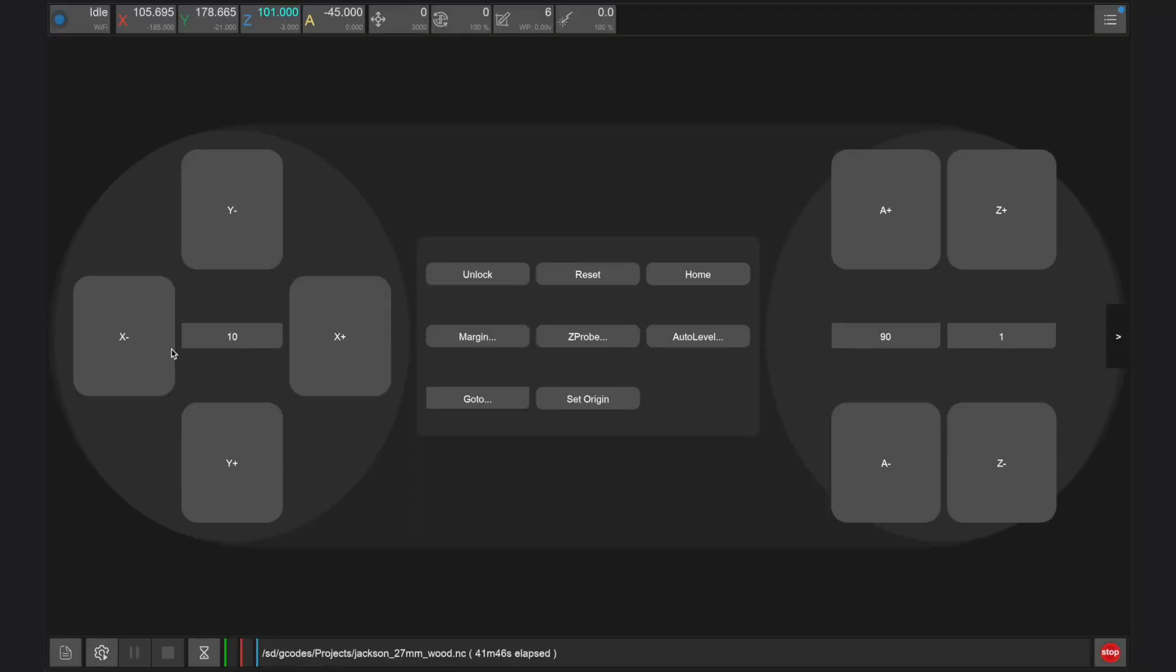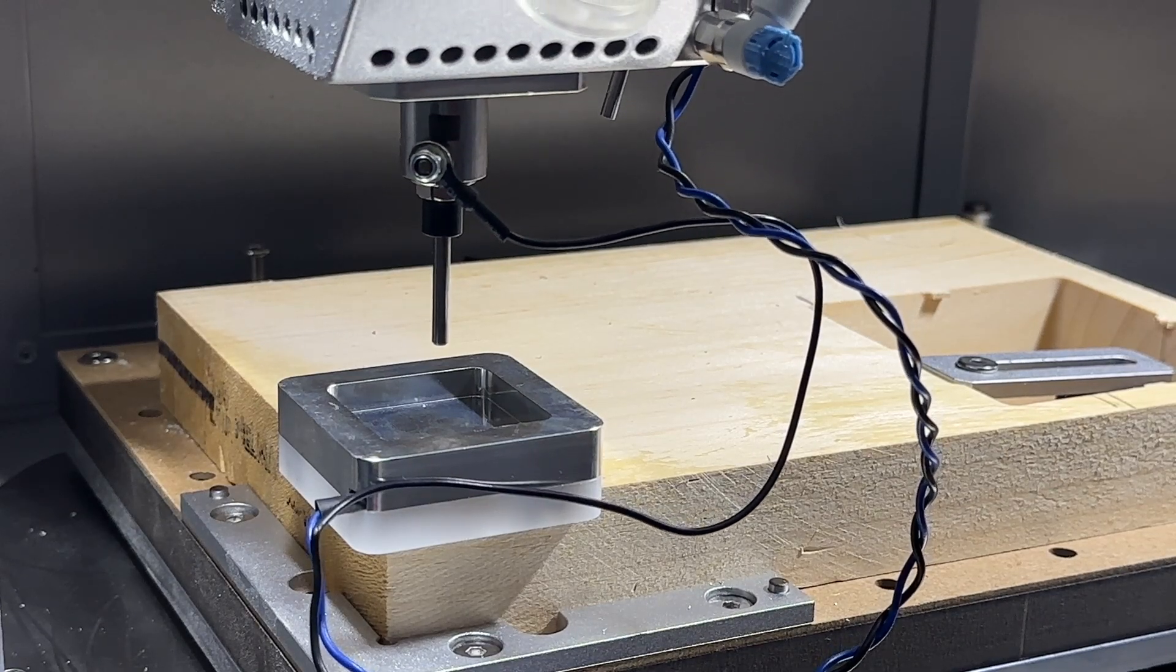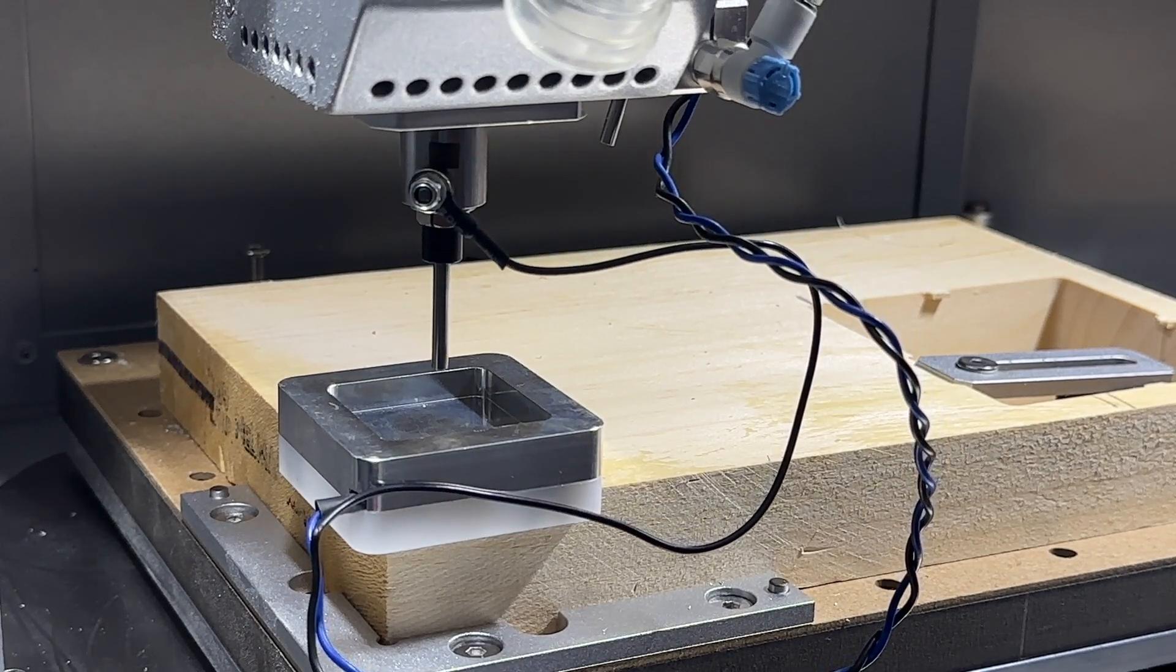After putting all these items in place, you may need to readjust and manually move the head of the Carvera again so that the probing tool is aligned within the pocket of the XYZ block. It does not need to be perfectly centered or lowered within the block, just hovering above it.